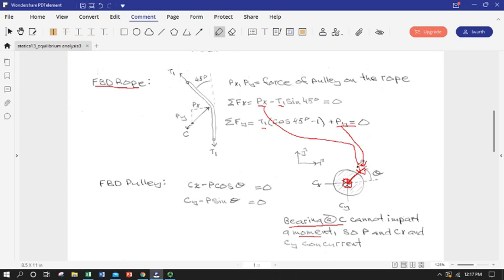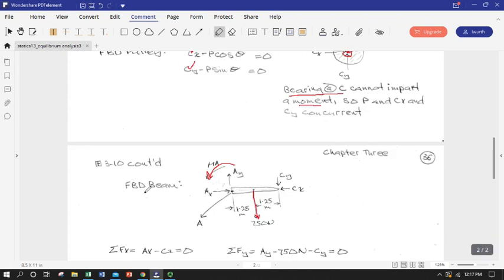We already know our angle theta from our geometry. And so theta should be known from the geometry. And so we have CX and CY, two unknowns, two equations. So we should be able to solve for all of our unknowns in the pulley FBD.